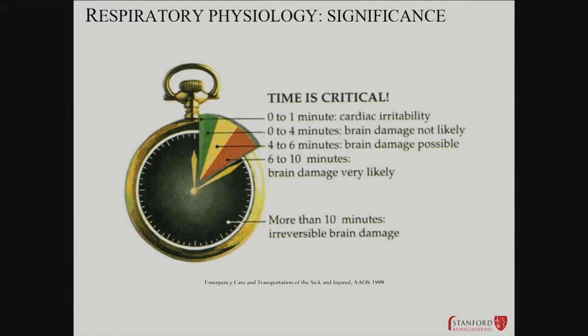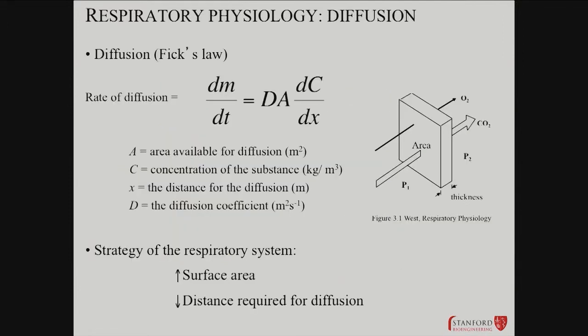Of course there are more subtle intermediate states that can happen. At some level, the whole setup of the respiratory system is to deal with this exact problem of a diffusional issue. You have to get gas exchange working. You have to create a surface area for gas exchange — and it's not just the surface area, not just the area available for diffusion, but it's the concentration gradients that are relevant for the gases. That's going to set a diffusion rate.